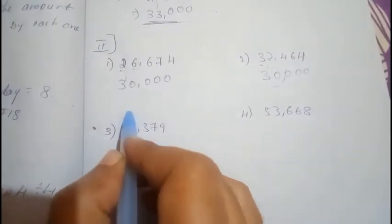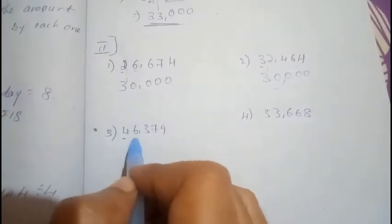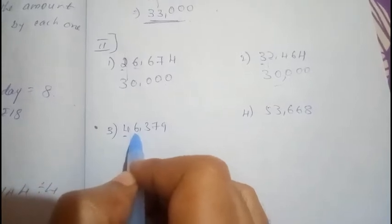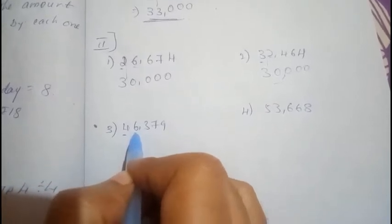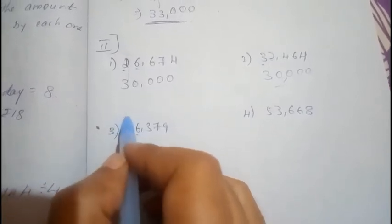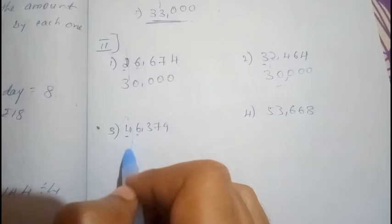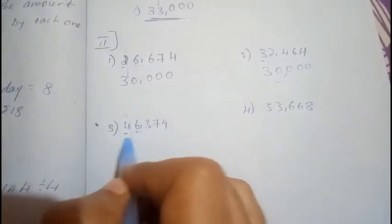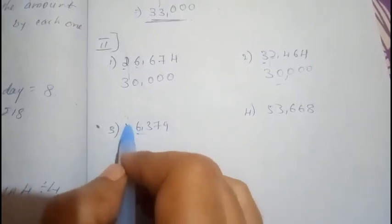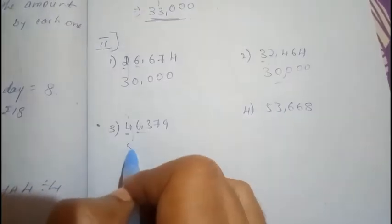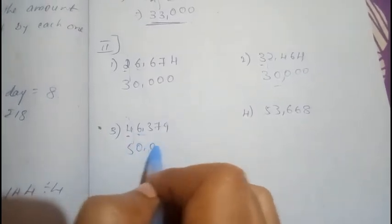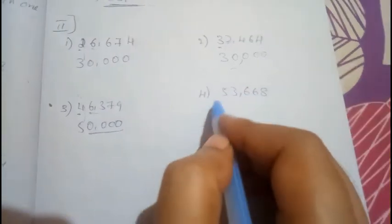For the third question, identify the ten thousands place and draw a line in your mind. The thousands digit is more than five, so add one: 4 plus 1 equals 5. The remaining digits become zeros. Your answer is 50000.